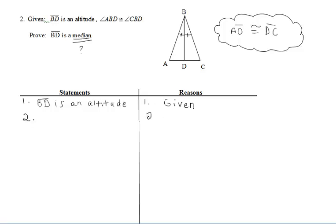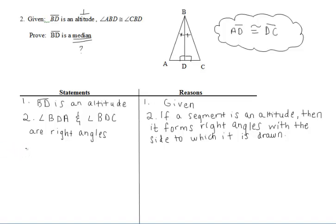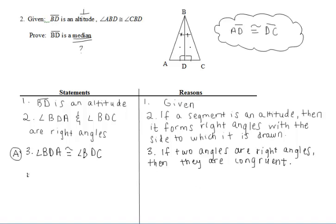So let's first write down our given about BD being an altitude and see what we get as a result. Remember, an altitude forms right angles with the side to which it's drawn. So we get two right angles: angle BDA and angle BDC. The reason is one of our new reasons: if a segment is an altitude, then it forms right angles with the side to which it is drawn. We want to say angle BDA is congruent to angle BDC because if two angles are right angles, then they are congruent.